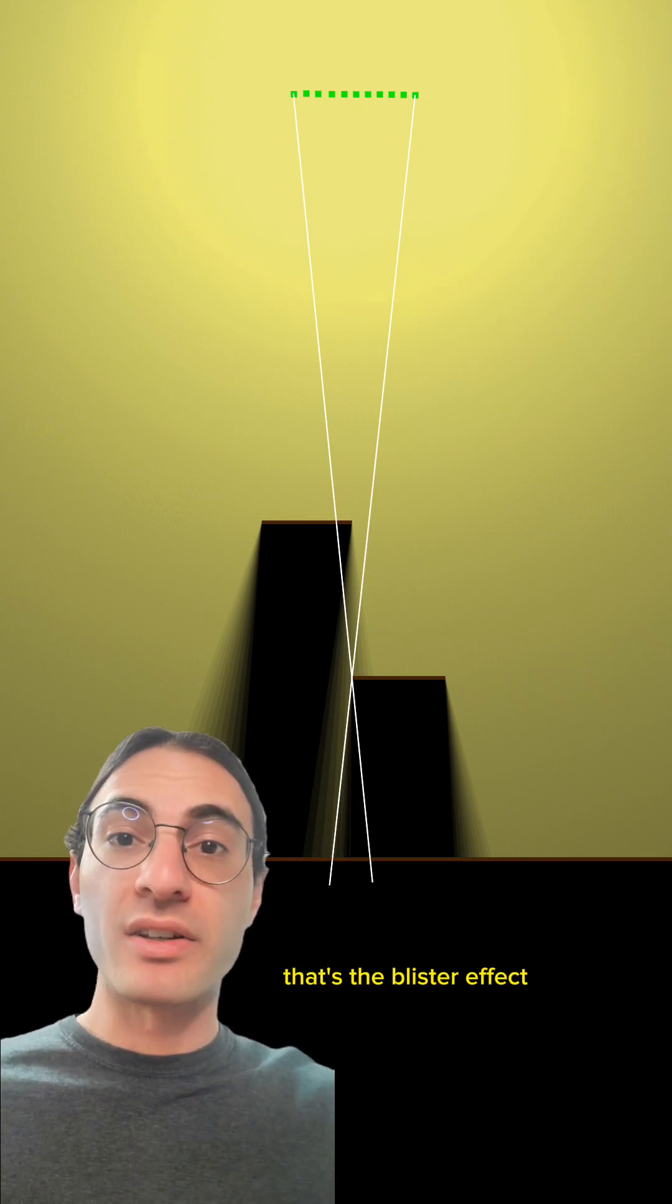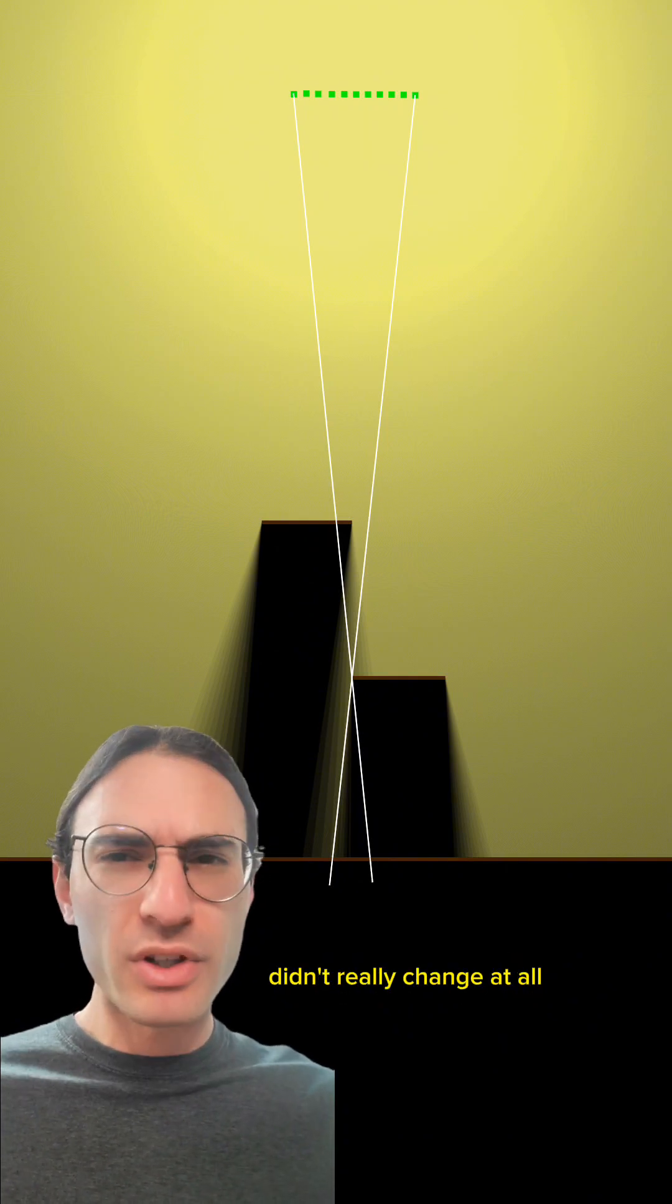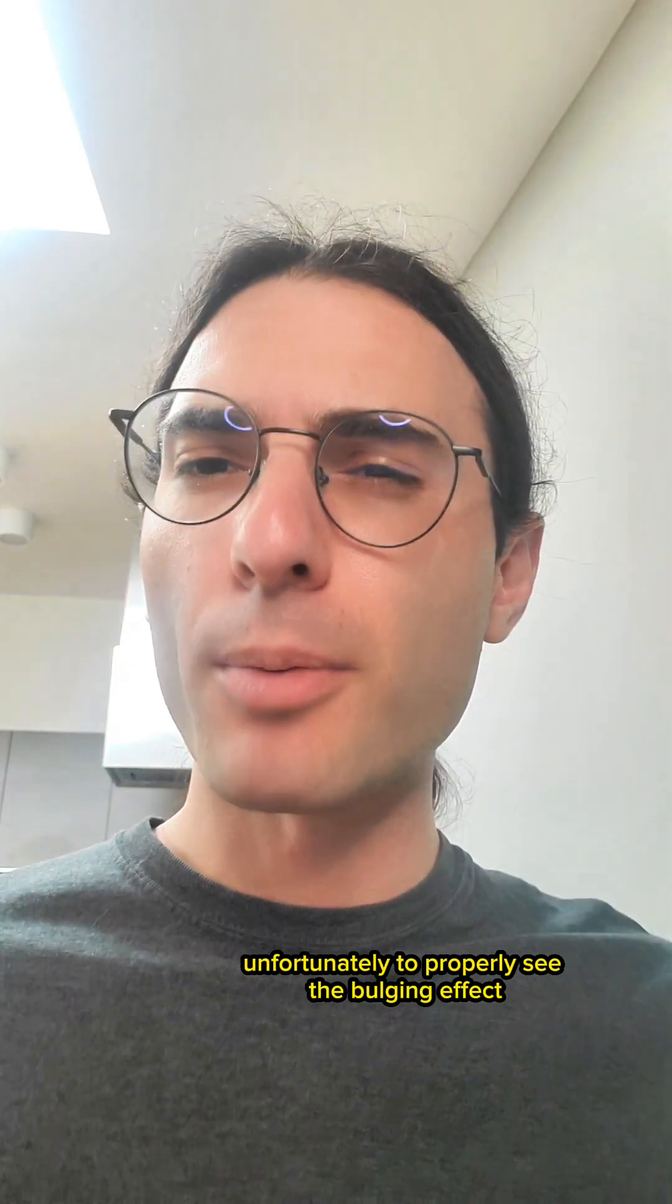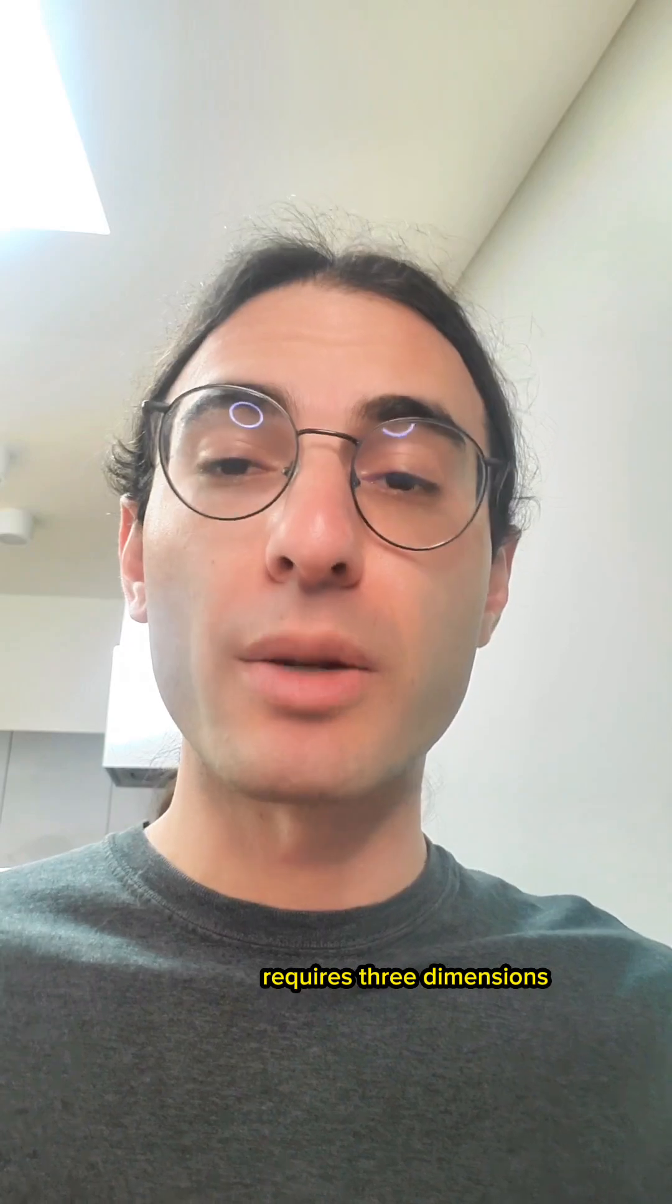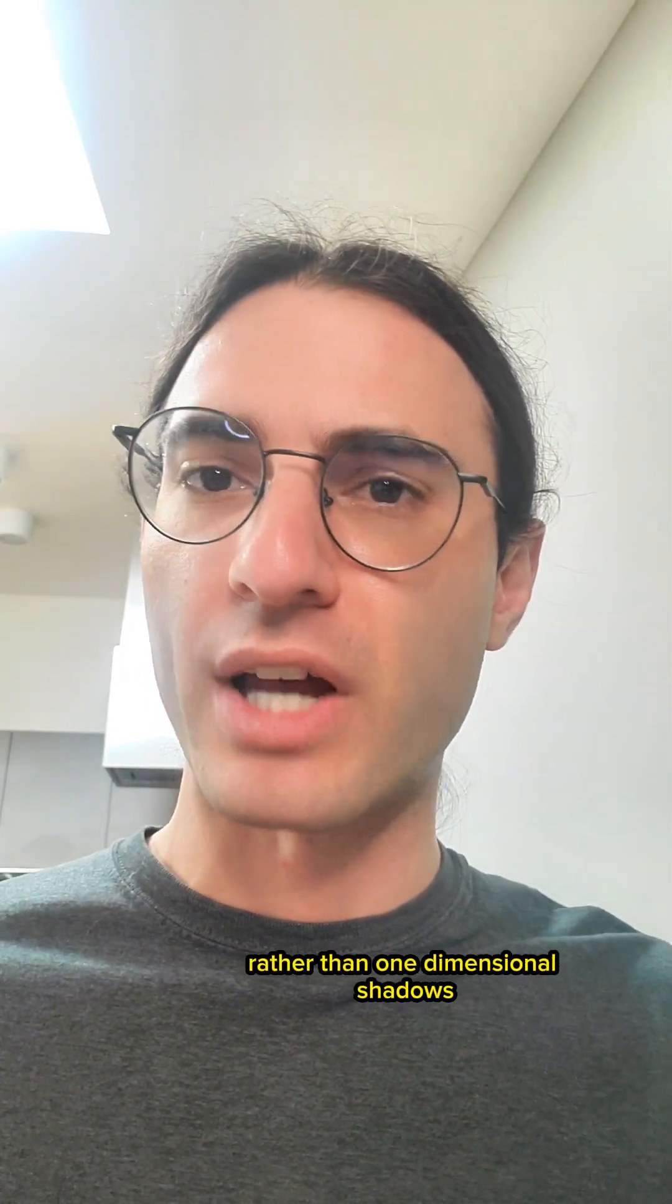That's the blister effect. The umbra of the object further from the light source grew. And notice that the umbra of the closer object didn't really change at all. Unfortunately, to properly see the bulging effect requires three dimensions rather than just two dimensions, because you need two-dimensional shadows rather than one-dimensional shadows.